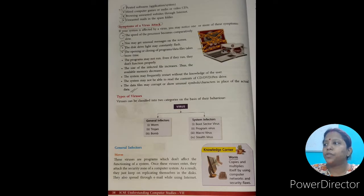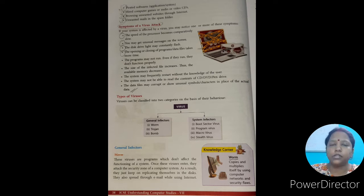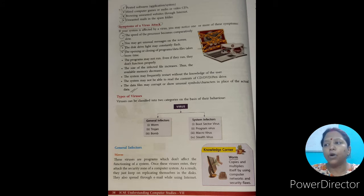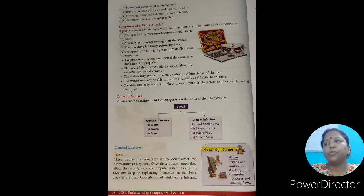Types of viruses. Viruses can be classified into two categories on the basis of their behavior: general infector and system infector. General infector is further classified into worm, trojan, and bomb. System infectors can be classified into boot sector virus, program virus, macro virus, and stealth virus.